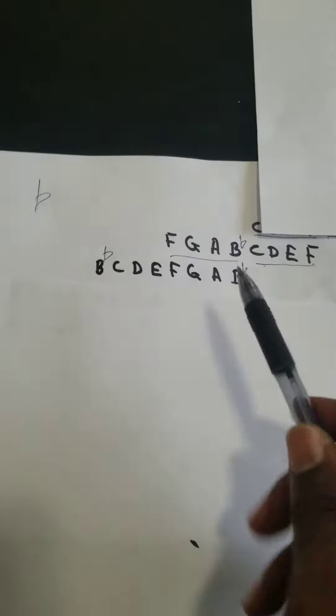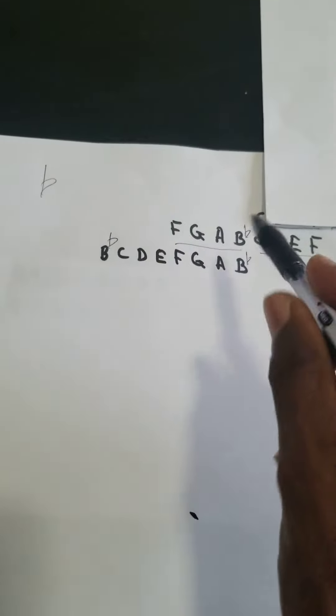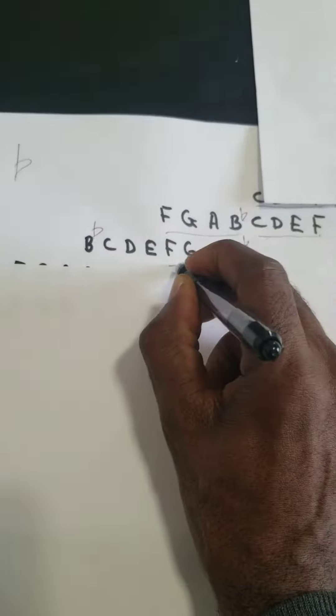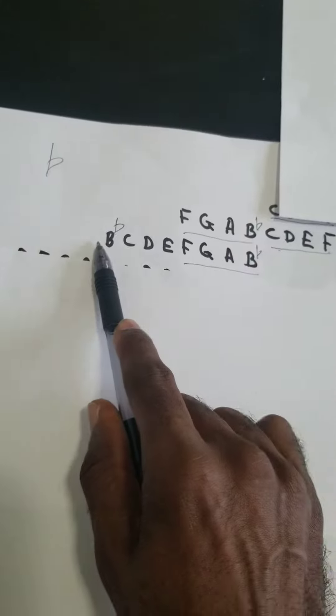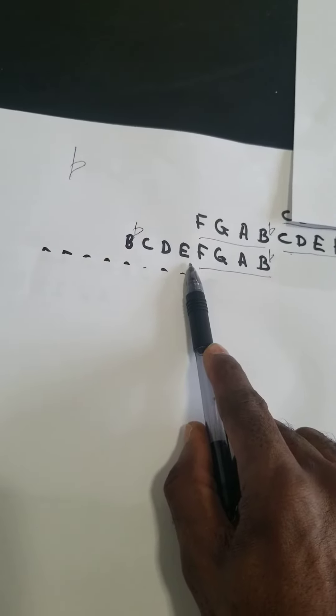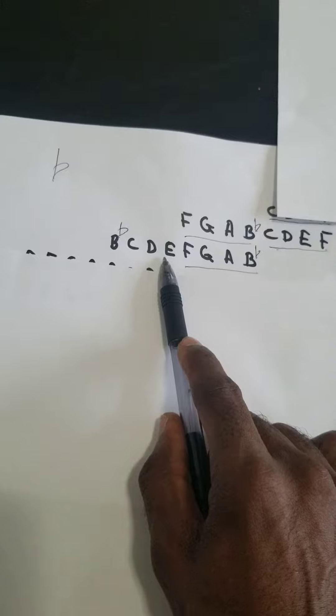The first tetrachord, which is the last tetrachord of the scale that we have now, is correct because we borrowed that from F major. Now we need to find out something about the first tetrachord.